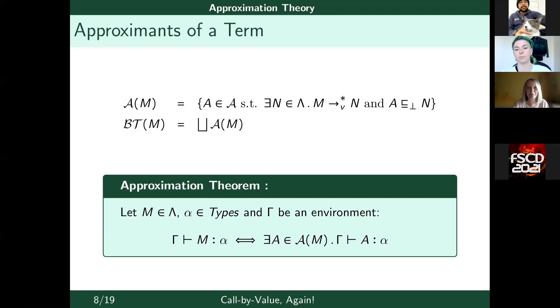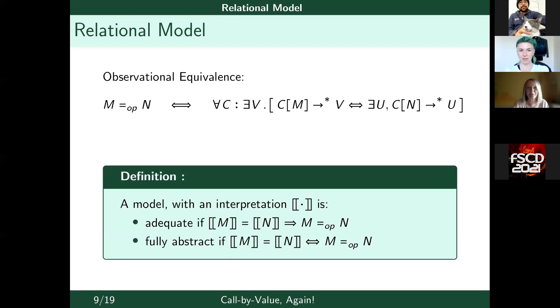This notion of Böhm tree is really central in call by name, but in call by value it is only the beginning. The model I will present entails the approximation theorem with respect to this notion of approximants — so we have a correspondence between types of terms and types of approximants. This is really central and important. Now let's talk more in detail about models.